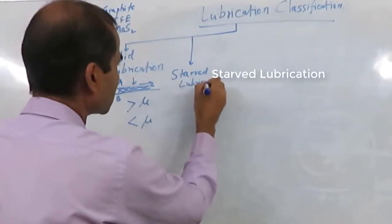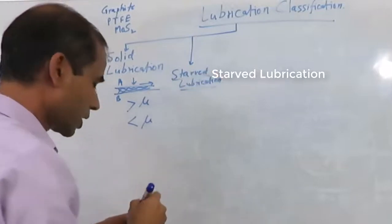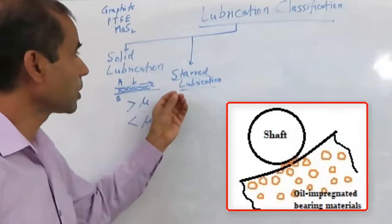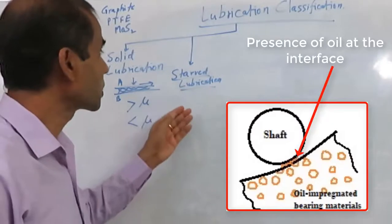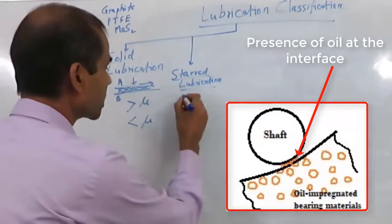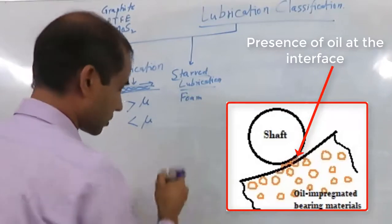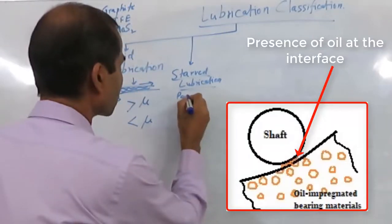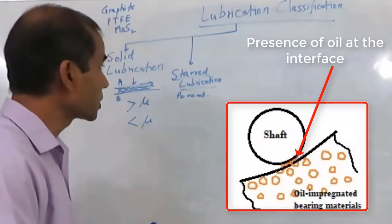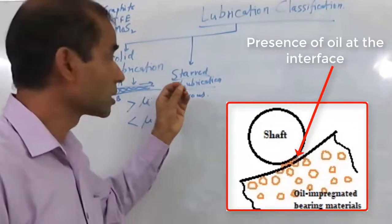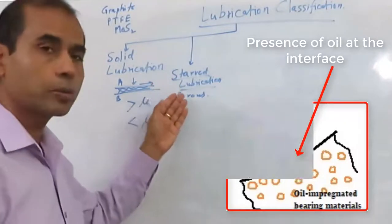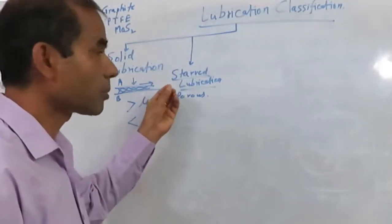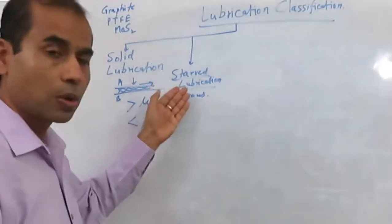There is also what we can call stub or starved lubrication. This is basically solid lubrication combined with some amount of lubricant. A very little amount of lubricant in the form of vapour can be used, or porous materials can be used in which we have impregnated some amount of liquid lubricant. This is called stub lubrication because it is a combination where solid-to-solid contact occurs with some amount of lubricant, and it reduces friction quite drastically.